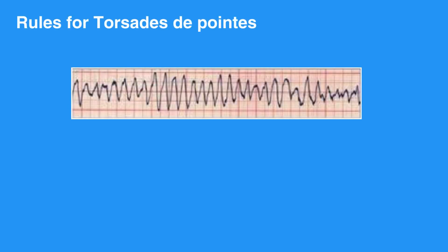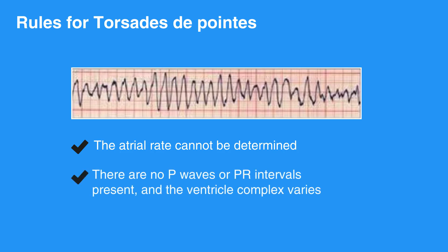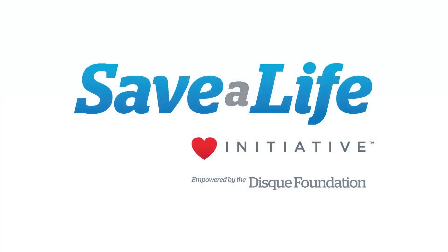The rules for Torsade de Pointes, which is an irregular wide complex tachycardia, include no regularity. The atrial rate cannot be determined. The ventricular rate is usually between 150 and 250 beats per minute. There are no P waves or PR intervals present, and the ventricular complex varies. This concludes our lesson on Ventricular Fibrillation and Pulseless Ventricular Tachycardia. Next, we will review Pulseless Electrical Activity and Asystole.